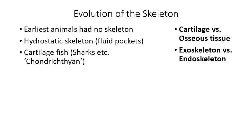The earliest animals, the sea sponges, had no skeletons. Then some evolved into more advanced animals — like sea stars, commonly called starfish — that had radial symmetry and something called a hydrostatic skeleton. A hydrostatic skeleton works by filling little pockets with fluid to create pressure, which holds the animal in its proper shape. Eventually, some of those animals evolved into the cartilage fish, known as chondrichthians, which have a skeleton made out of cartilage.